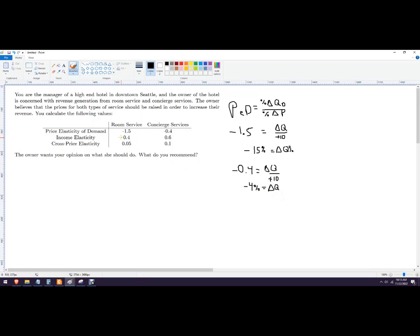Now income elasticity - I will only use that if I have a change in income, which in this problem I don't have. But you could have a problem where it says what happens to sales if income goes up by 10 percent. So that formula for income elasticity is the percent change in quantity demanded over the percent change in income.